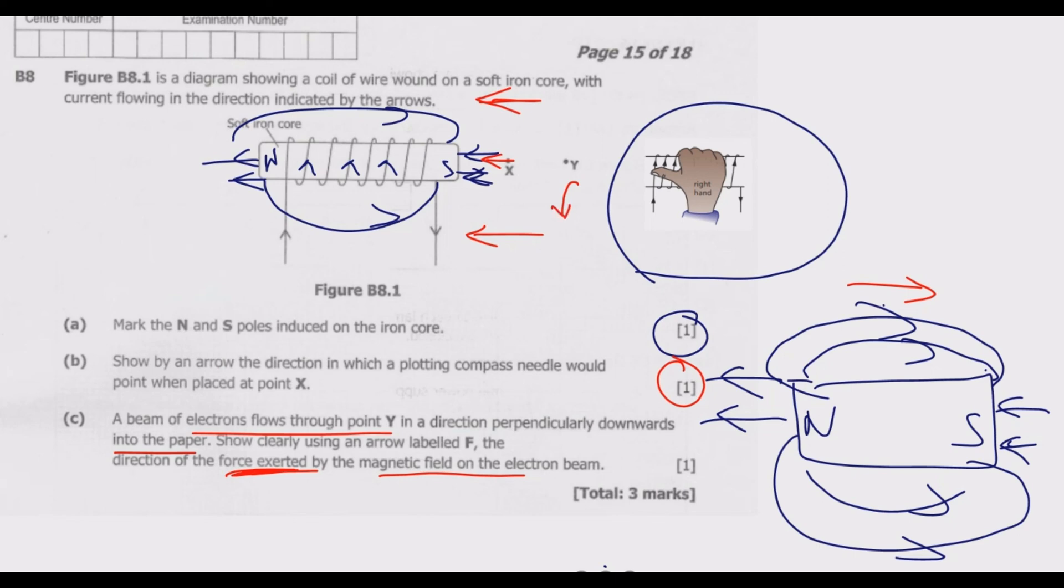The direction of force exerted by magnetic field will be downward in this direction, which will be F. It will be downward if you use Fleming's left-hand rule. This is how you get the three marks on this question.